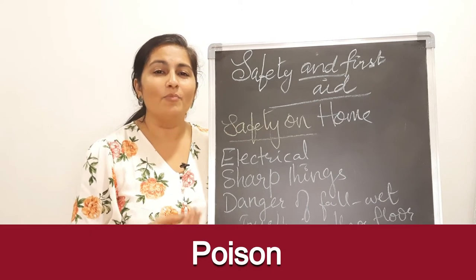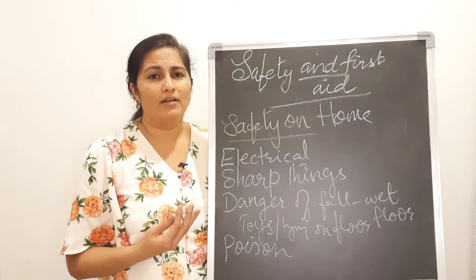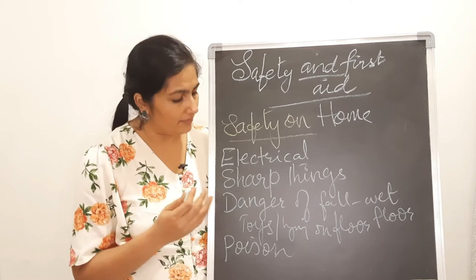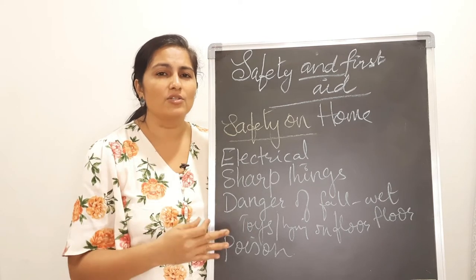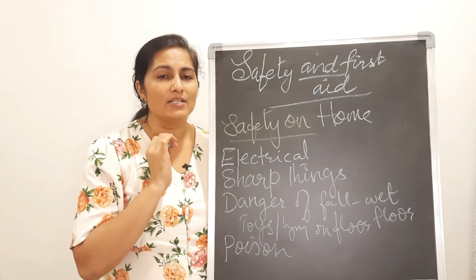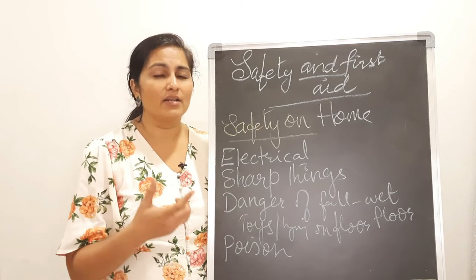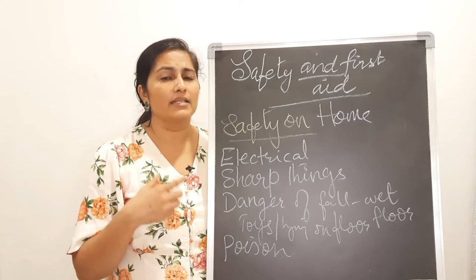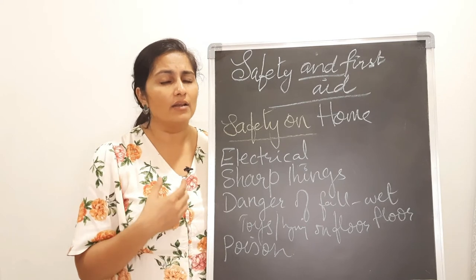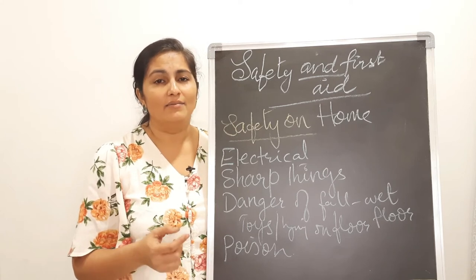We may not keep poison at home, but things like phenyl, cleaning acid, medications, pesticides, and disinfectants used for household purposes can be poisonous substances. We must keep them out of children's reach — stored high up in a cabinet, labeled as 'poison' or 'do not touch.' If anyone ingests these, they can suffer severe burning, vomiting, headaches, dizziness, and other serious complications. Children should not touch medicines either, even for fun.